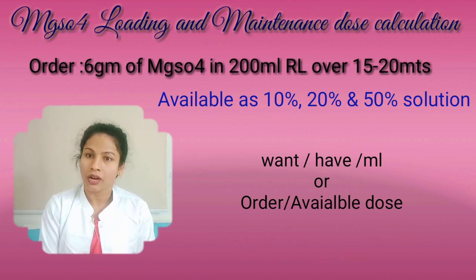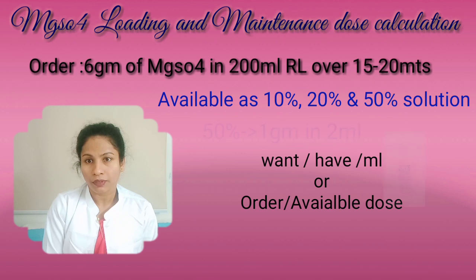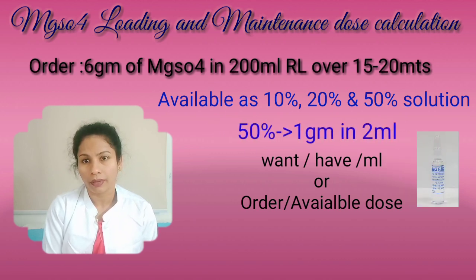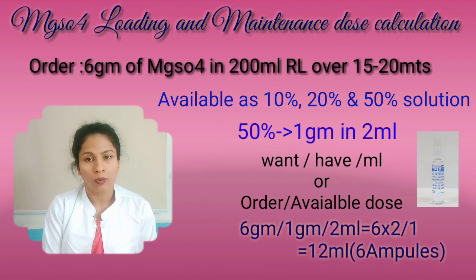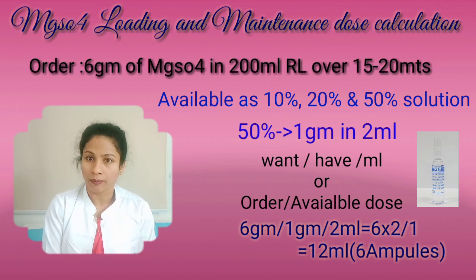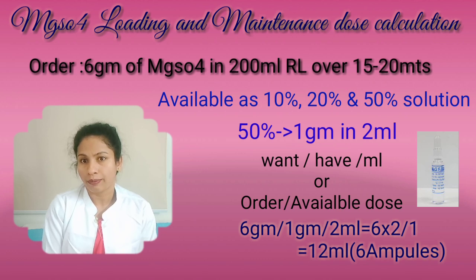Next, I will tell you how to take 6 grams of magnesium sulphate from the 50% solution. The 50% solution is available in 2 ml ampoules, and 2 ml gives 1 gram. Applying the formula: what we want is 6 grams; what we have is 1 gram per 2 ml. So to take 6 grams we need 12 ml, which means we take 6 ampoules of magnesium sulphate. This completes the loading dose.